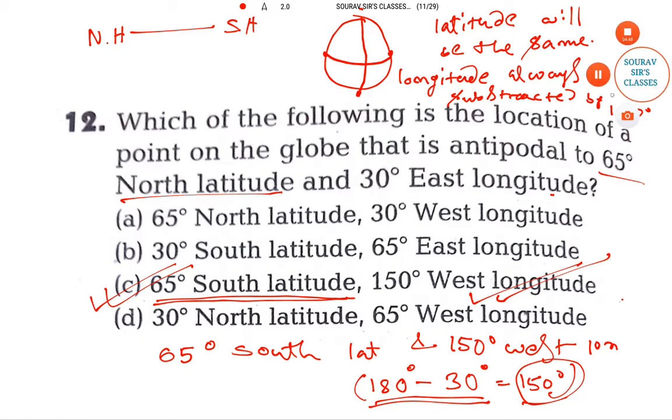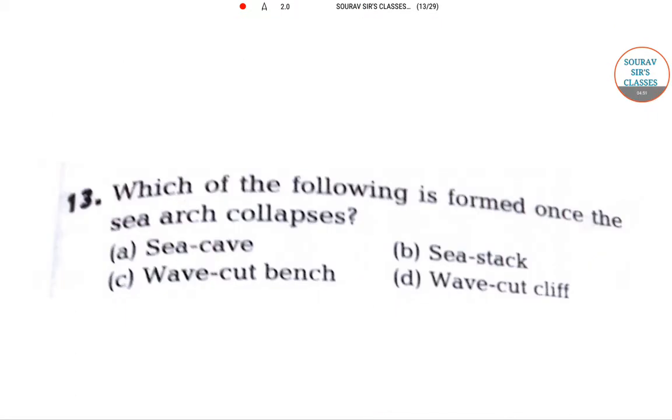Let's go for another question. The question is: which of the following is formed once the sea arch collapses? The options are sea cave, sea stack, wave-cut bench, and wave-cut cliff.